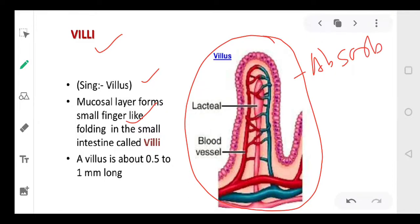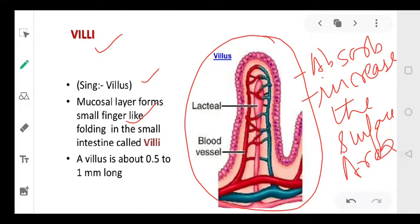Secondly, because these are the folds, this increases the surface area of absorption. Villi are the folds in small intestine. These are the folds in the mucosal layer. The mucosal layer is our innermost layer. Villi in small intestine and large intestine are the folds in the mucosal layer.